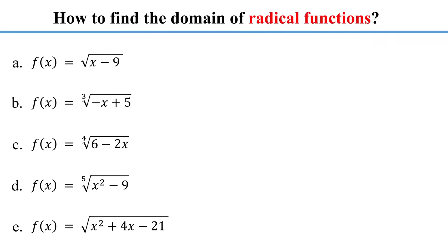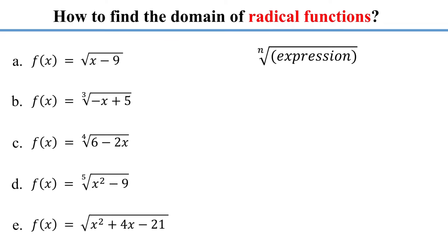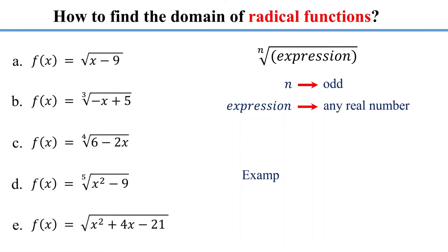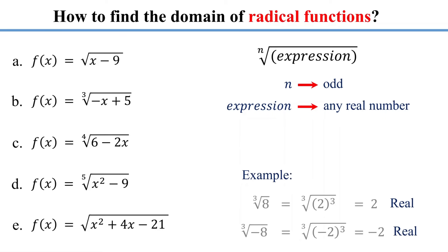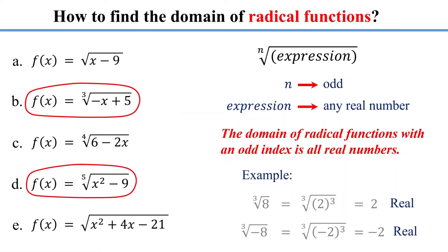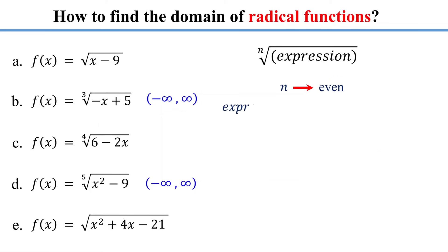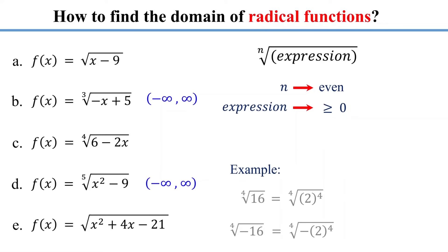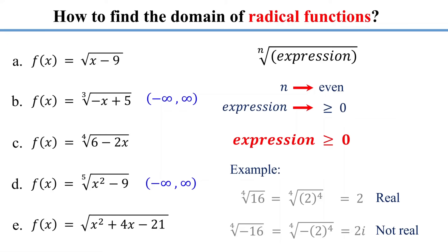Now let's move on to finding the domain of radical functions. Radical functions have a variable under a radical and can have either an odd or an even index. When the index is odd, the expression under the radical can be any real number, because taking the odd root of any real number always results in a real number. Therefore, radical functions with an odd index are defined for all values of x — their domain is all real numbers. However, for a radical function with an even index to be defined, the expression under the radical must be greater than or equal to zero, because taking the even root of a negative number results in an imaginary number. To find the domain, set the expression under the radical greater than or equal to zero and solve.